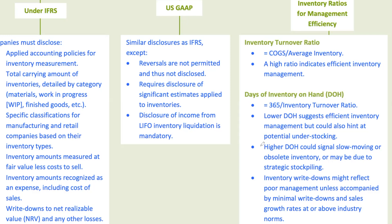In industries with thin margins, like retail, these ratios are crucial. A company with high turnover and low DOH might look efficient, but if they run out of stock at the wrong time, they could lose sales to competitors. On the other hand, a company with too much inventory might have a bloated balance sheet and face higher costs from spoilage or obsolescence.